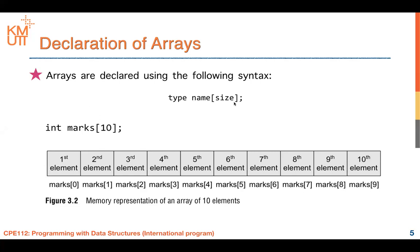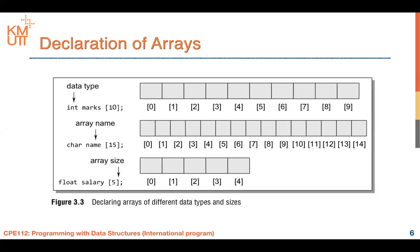Here are some examples of how to declare arrays. For a string — which is an array of characters — you declare it as: char name[15], meaning name is an array of 15 characters with indices starting from zero. For a floating point array of size five, you have five floating point numbers accessed by subscripts zero through four.